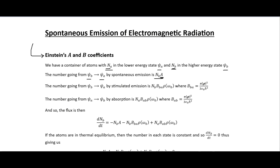A is what we're going to try and find using this technique. The number going from the higher to the lower state by stimulated emission is N_b times B_ba times the density of states, where B_ba is what we found in the previous video. The number going from the lower state to the higher state by absorption is N_a times B times the density of states.